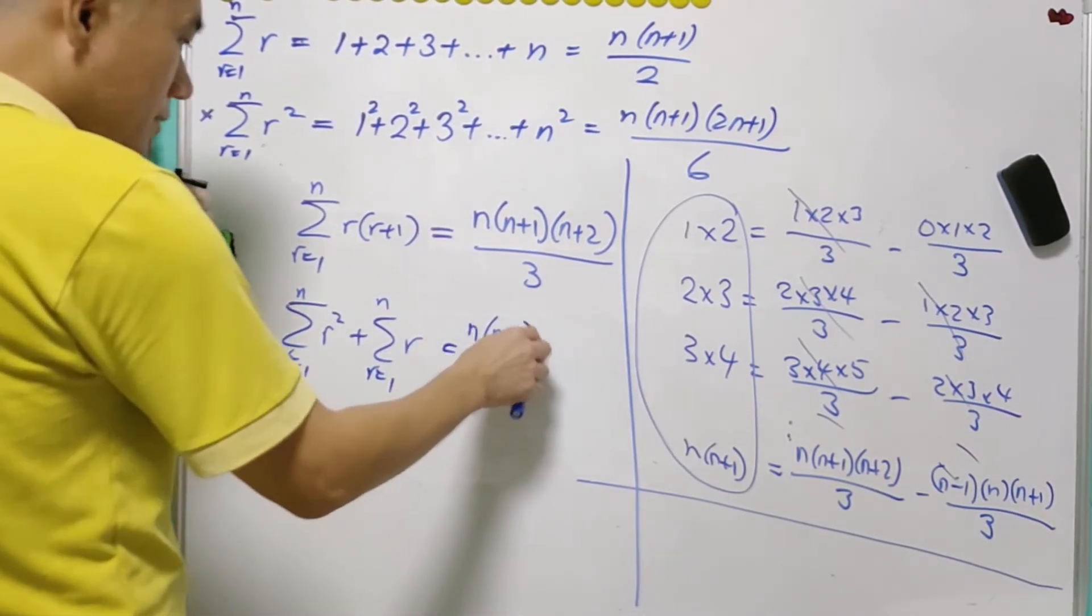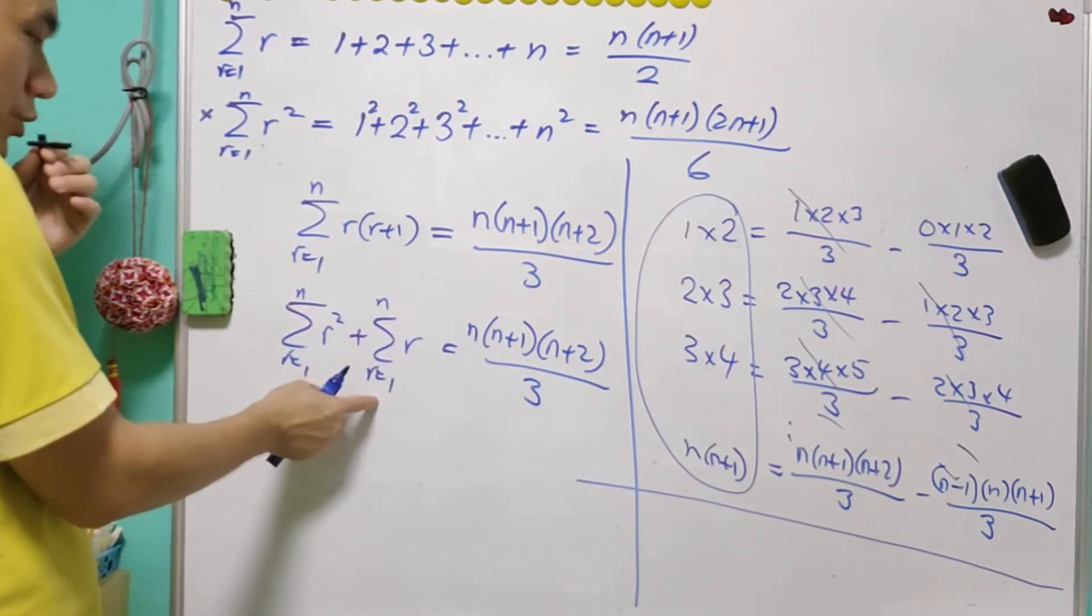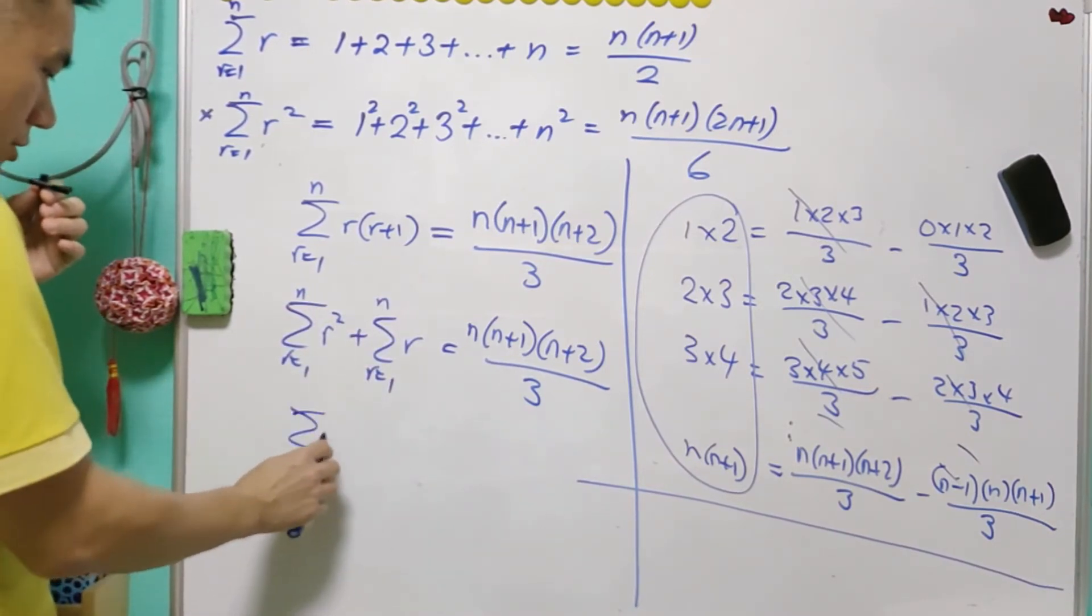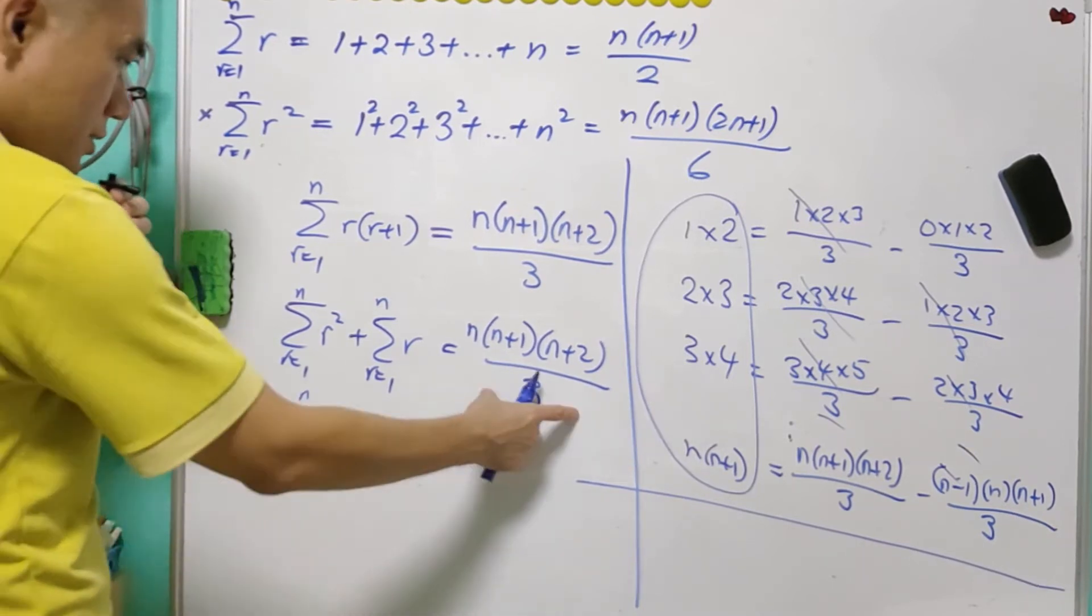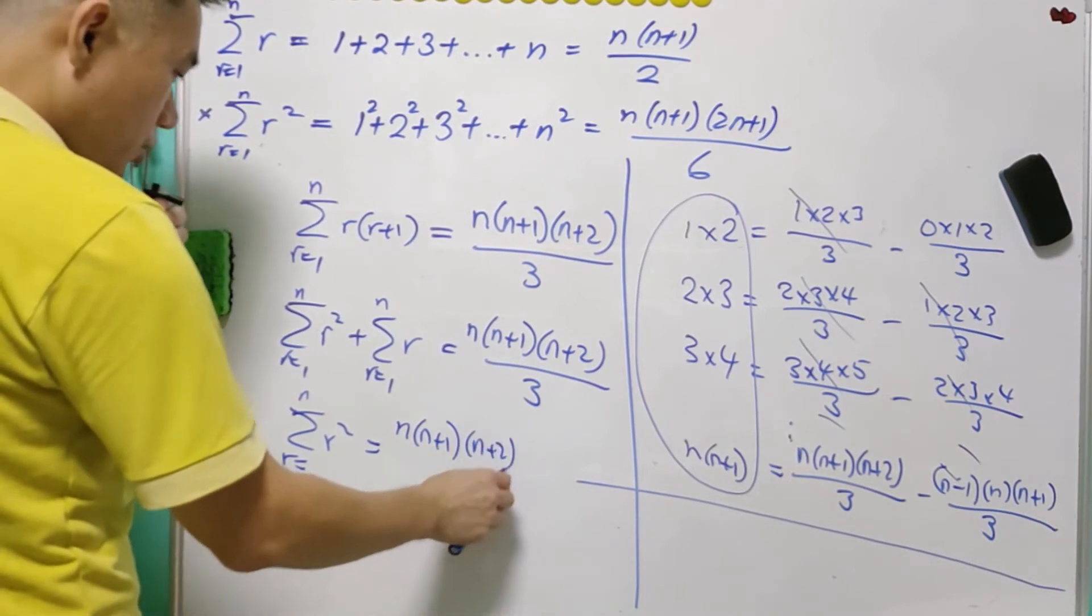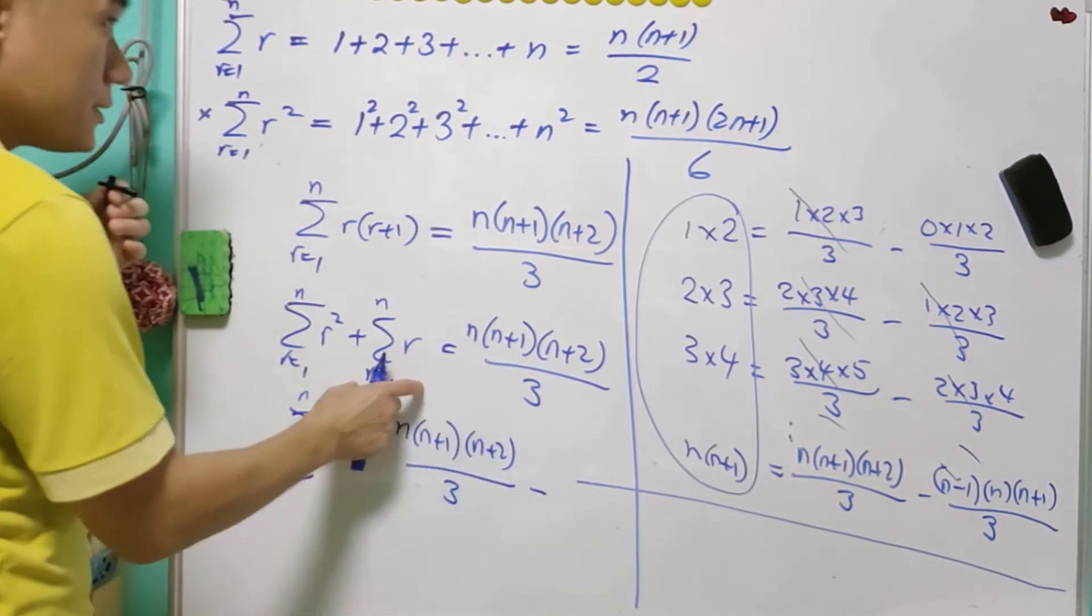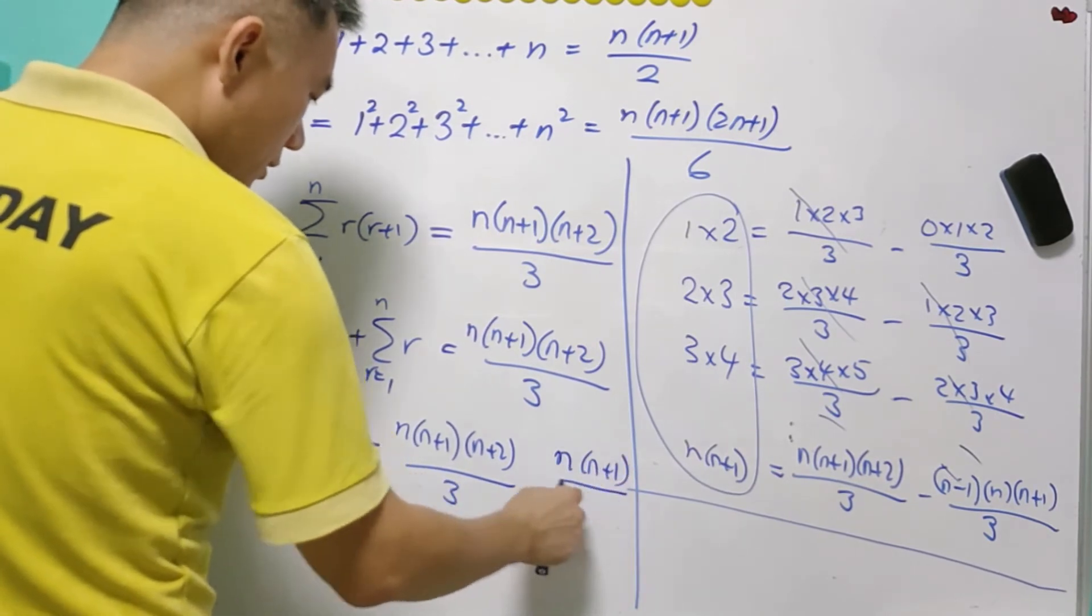And just copy down, and we already know that this is equal to n(n+1)(n+2) over 3, minus n(n+1) over 2.